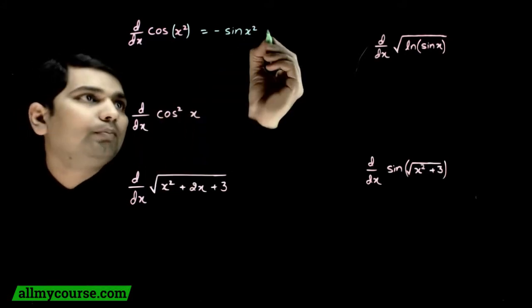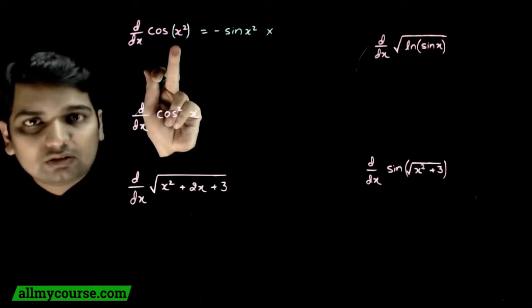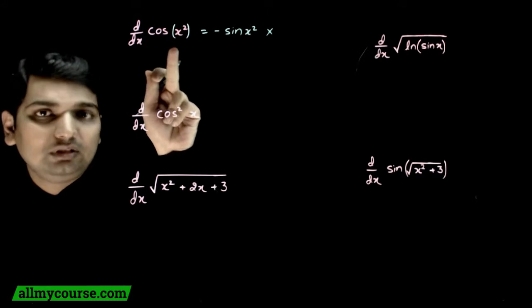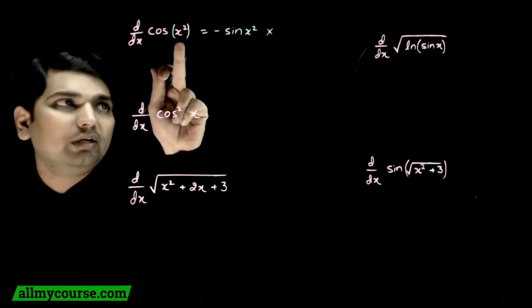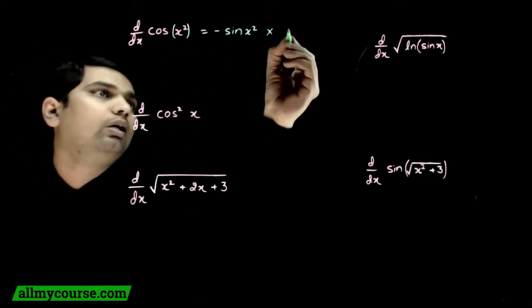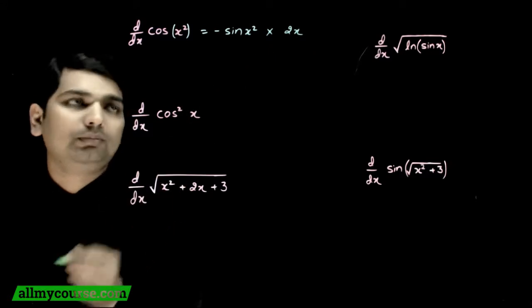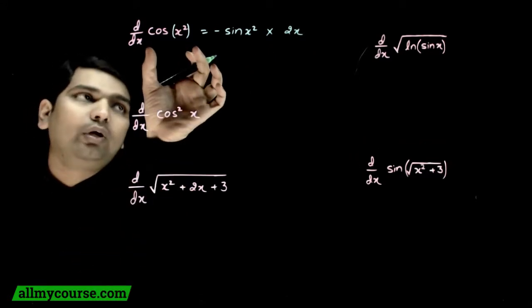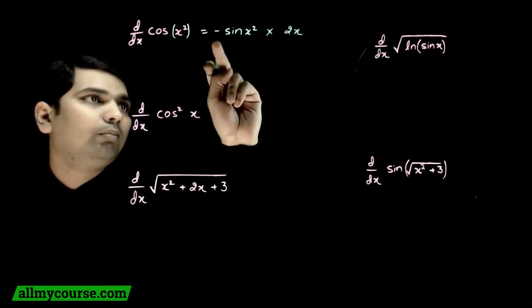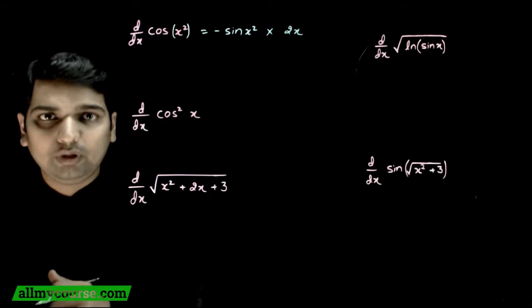Multiplied by differentiation of that stuff. Is stuff ka differentiation kya hoga — x square ka differentiation kya hoga? 2x. To cos(x²) ka differentiation kya hoga: minus sin(x²) multiplied by 2x.